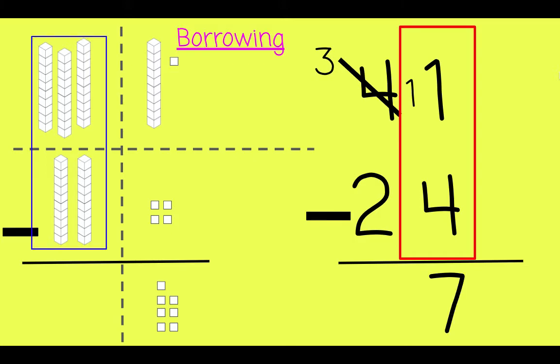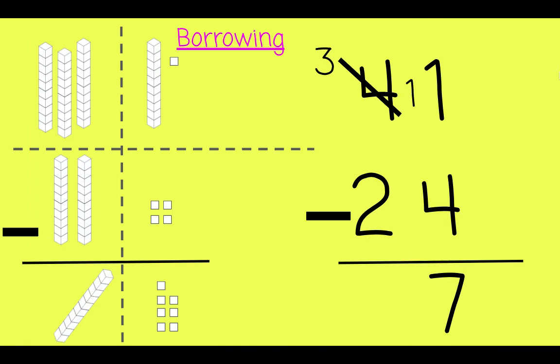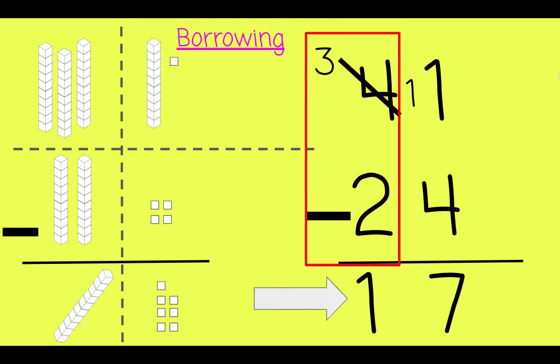Now in the 10s column, 3 10s take away 2 10s, which leaves us with one 10 rod. And over here, 3 take away 2 is 1. 17 is our difference, or answer.